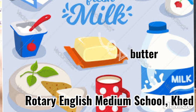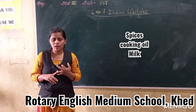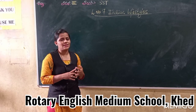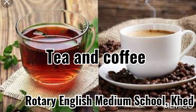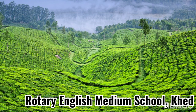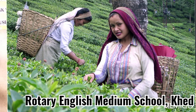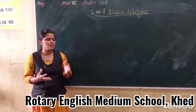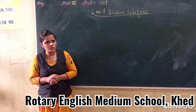I hope you have understood about the spices, cooking oil, and milk. The next topic is tea and coffee, which is also grown in India. Mostly tea and coffee are grown in the hilly regions of Assam, Nilgiri, and Kerala. Tea is also very famous in the country.